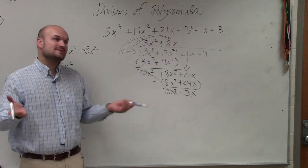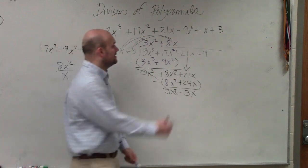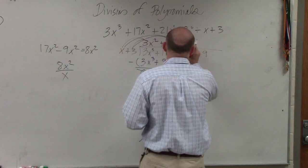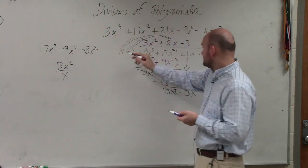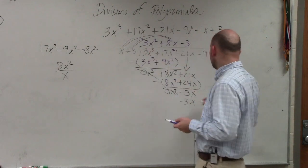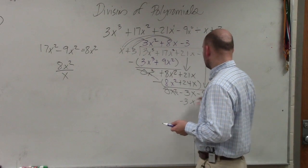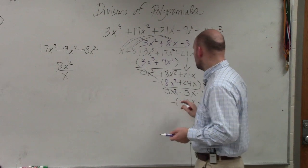Now we do the same process all over again. x divides into a negative 3x, negative 3 times. Negative 3 times x is a negative 3x. Negative 3 times 3 is a negative 9. Bring down this negative 9. Put in parentheses and subtract.